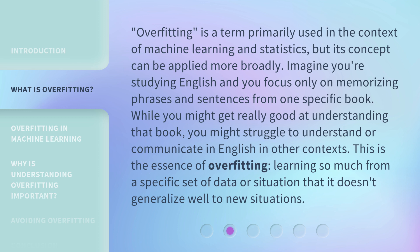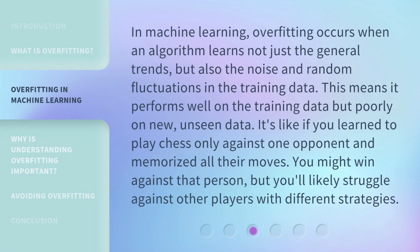This is the essence of overfitting: learning so much from a specific set of data or situation that it doesn't generalize well to new situations. In machine learning, overfitting occurs when an algorithm learns not just the general trends, but also the noise and random fluctuations in the training data. This means it performs well on the training data, but poorly on new, unseen data.